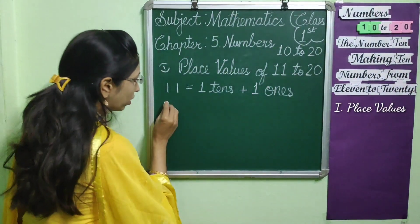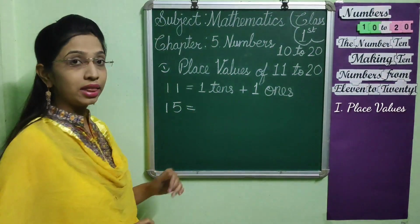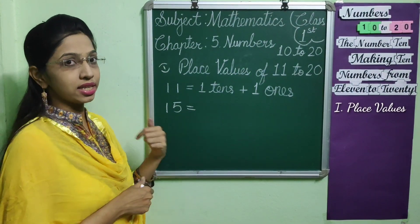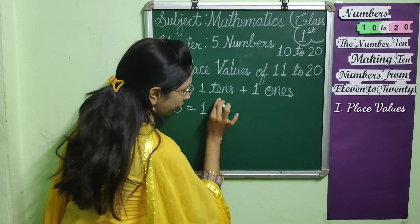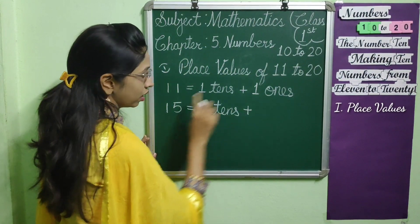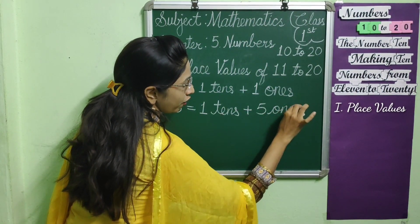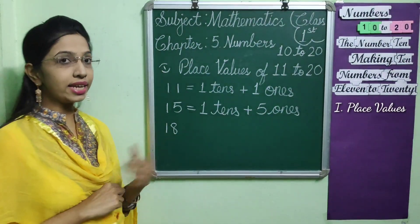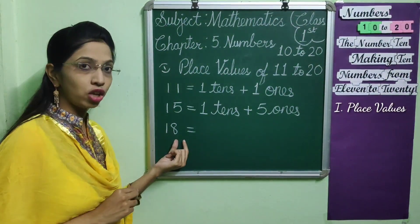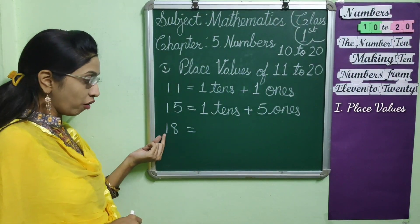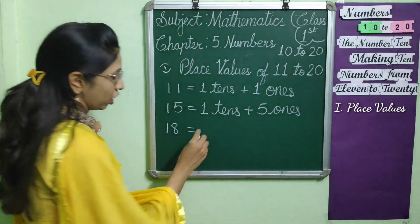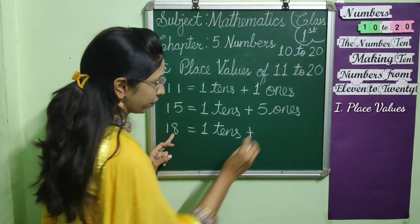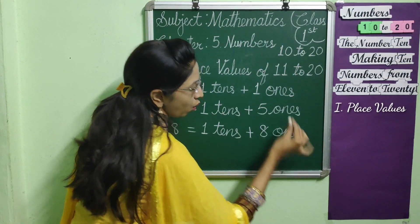Now, I will explain you with one more number. Let us take 15. The place value of 5 is 1's and the place value of 1 is 10's. So, we can write it as 1 ten's plus 5 one's. Now, children, you say me how to write the place value of 18. The place value of 8 is 1's and the place value of 1 is 10's. So, we write 1 ten's plus 8 one's.